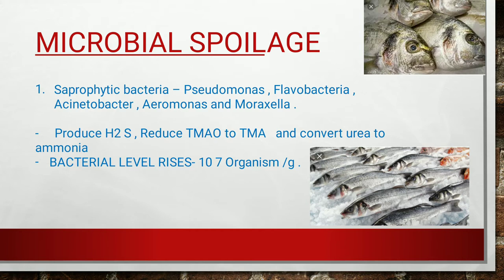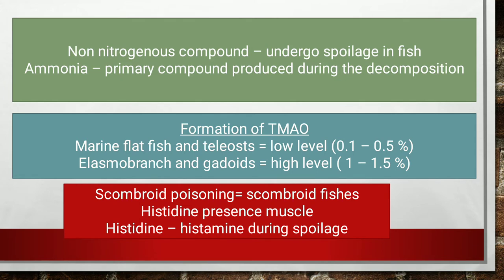Regarding non-nitrogenous compounds: urea undergoes conversion to ammonia during decomposition — ammonia is the primary compound produced. Trimethylamine oxide (TMAO) is present in fish and during spoilage is converted into trimethylamine (TMA), which is very harmful and may cause decomposition.